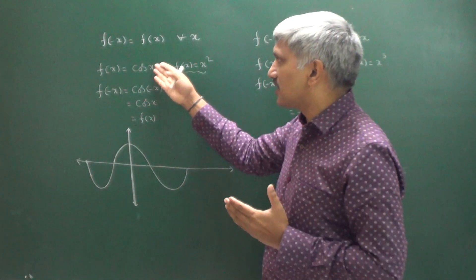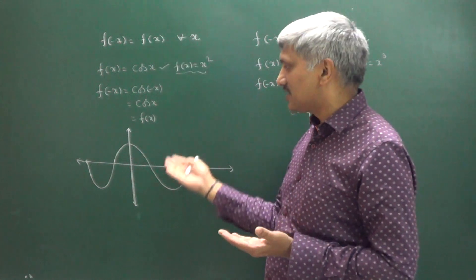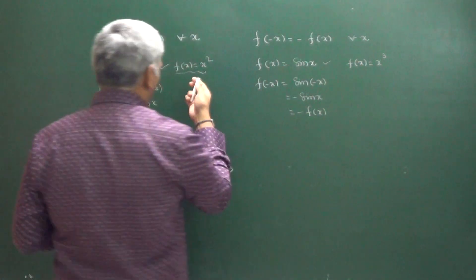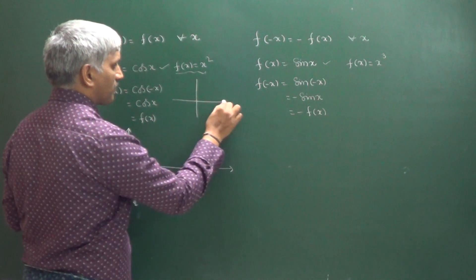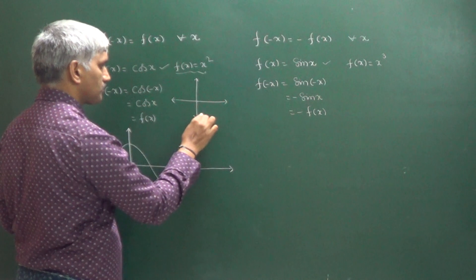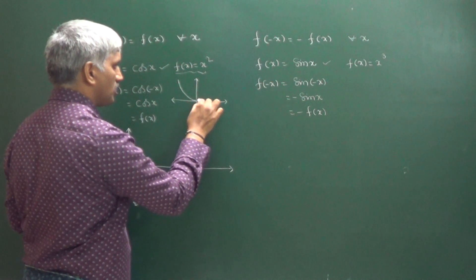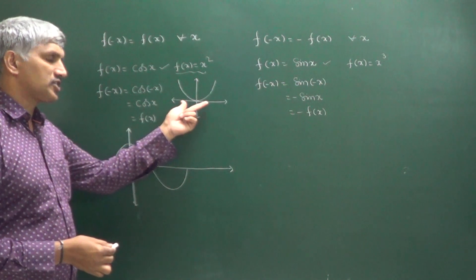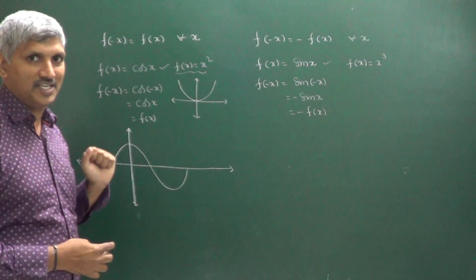That means even function graph is symmetric about the y-axis. Similarly, the graph of f of x equal to x squared is also symmetric about the y-axis. So even function graph is symmetric about the y-axis.